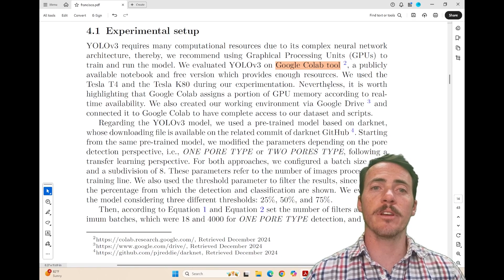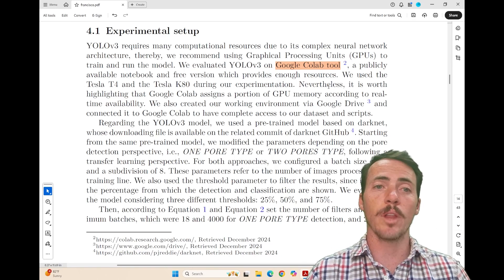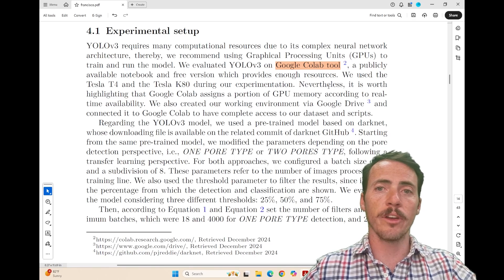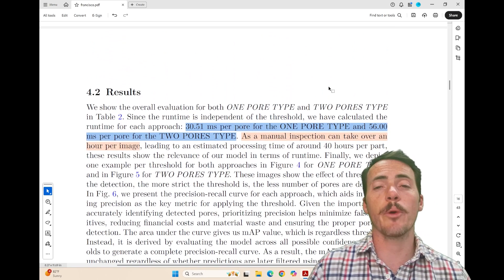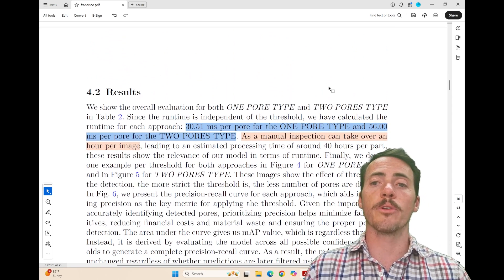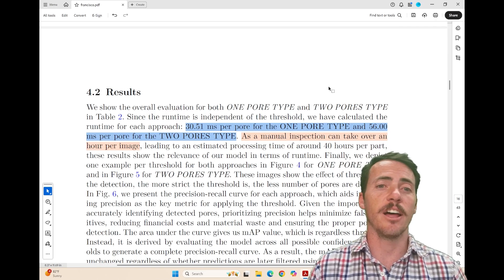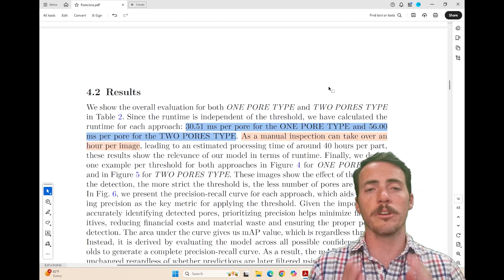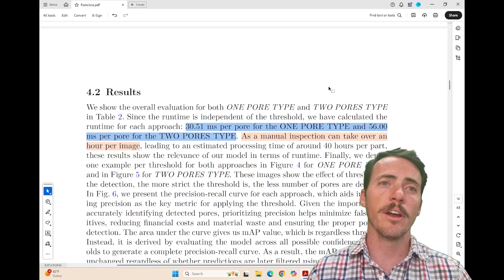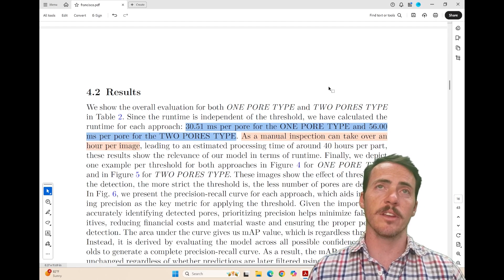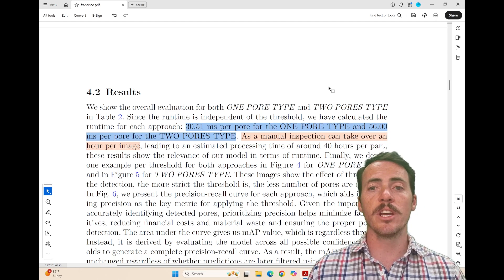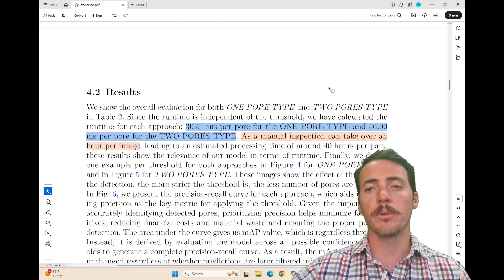When it came time to implement machine learning, I like this. They actually used Google Colab, which is awesome. They've got the notebook there, and their results showed that they were able to detect the two different types of pores very quickly. 30 milliseconds versus 56 milliseconds per pore, depending on which type of defect they're looking for. When you compare that with the manual inspection, that can take sort of an hour per image. This is a crazy improvement on their time.